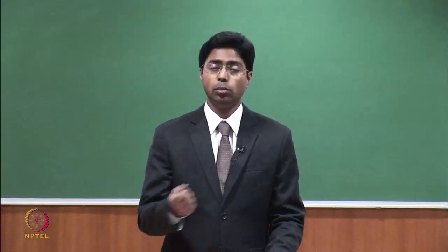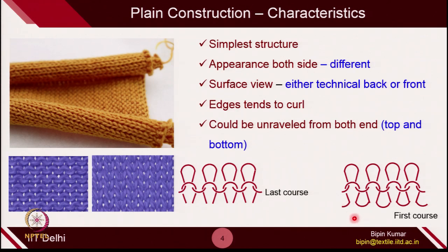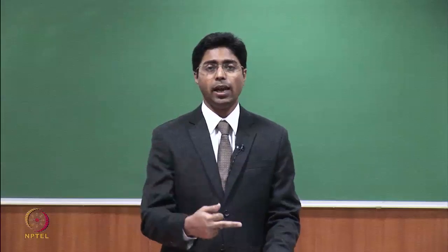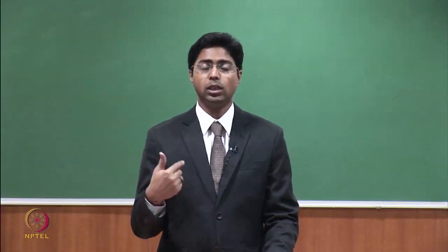I showed this in demo number 1 — how you can do unraveling from the top side, meaning the last course knitted on the machine. Also for the first course, although the head appears locked by the top loops, the sinker loops are free. If you pull from either end, the sinker loops come out, and once sinker loops come out, none of the loops remain stable — they come out as straight yarn segments. So from the first course or bottom-most course on the machine, you can also unravel by pulling the yarn.